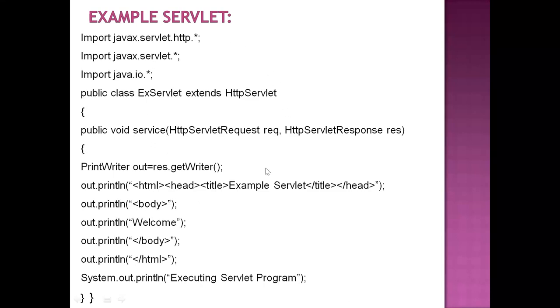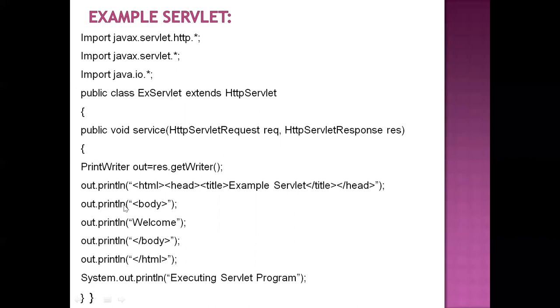Now let's see an example — one program using servlets and one using JSP — to compare which is easier to code. Here, a servlet program is written to display a welcome message. We need to import servlet packages and an IO package for printing, write a servlet class extending HttpServlet, write the service method for processing the request, and inside the service method write HTML content to print the welcome message. This servlet program for printing a welcome message requires 16 lines of code.